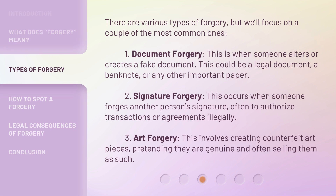There are various types of forgery, but we'll focus on a couple of the most common ones. One: document forgery — this is when someone alters or creates a fake document, such as a legal document, a banknote, or any other important paper. Two: signature forgery — this occurs when someone forges another person's signature, often to authorize transactions or agreements illegally. Three: art forgery — this involves creating counterfeit art pieces, pretending they are genuine and often selling them as such.